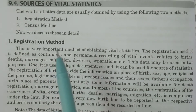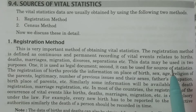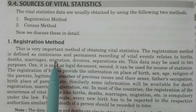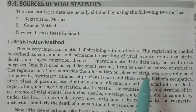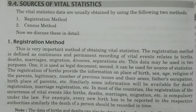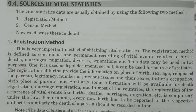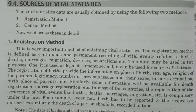First, the registration method. In this method, the data is collected for various vital events. The registration method is defined as the continuous and permanent recording of vital events, relating to births, deaths, marriages, migration, divorces, separations, etc., which are going to be registered continuously, and a permanent record is maintained. Such kind of collecting data is called the registration method.